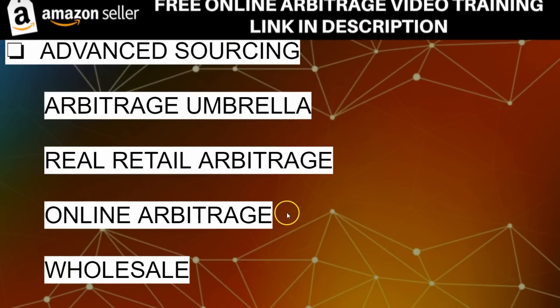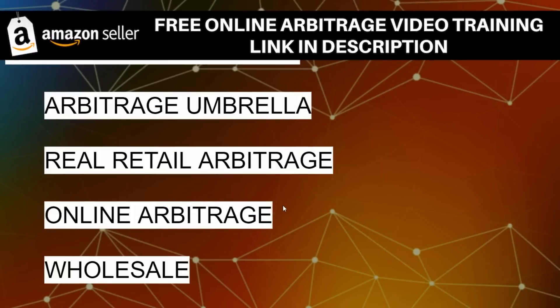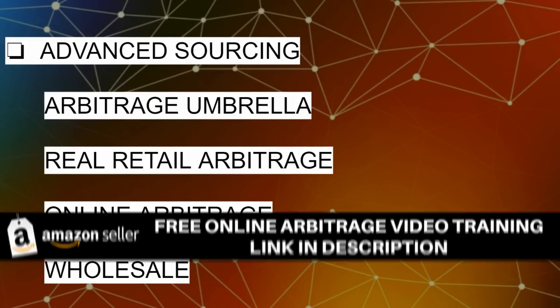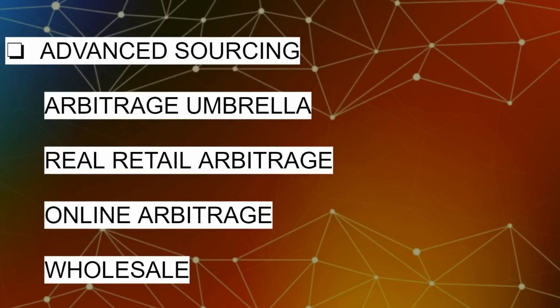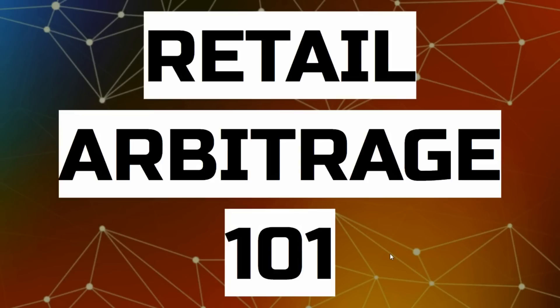The arbitrage umbrella is broad — you can make arbitrage anywhere: between Amazon and eBay, between Target and Amazon, or from a garage sale to Amazon or Mercari. Arbitrage means finding a product at a low point and selling it at a high point. Online arbitrage is the natural next step from retail arbitrage, with similar results. Beyond that, wholesale — connecting with dealers for wholesale pricing — is the most advanced sourcing technique for Amazon FBA.